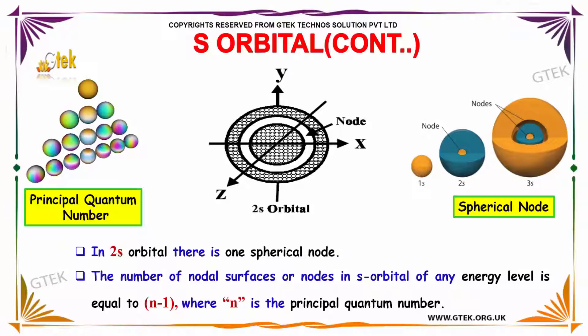You are able to see this is 1s. You got two circles for 2s and you got three here which is 3s. And these are called nodes.